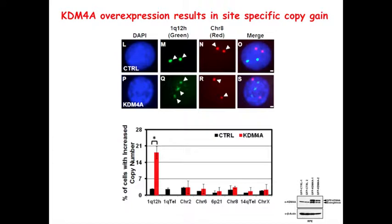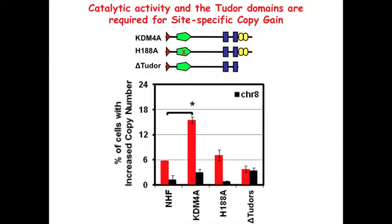We then introduced the enzyme transiently — under 24 hours, so only one complete cell cycle. When you do this, you can create the gain. The red signal is the region of interest, 1Q12, and the black is a different centromeric probe. When you introduce a catalytic mutation, you lose the effect — it doesn't create the gains anymore. If you delete recruitment modules such as the Tudor domains, you also don't get it. So we had a transient enzyme that could create a site-specific gain of a specific genomic region, requiring both catalytic activity and a chromatin binding module.